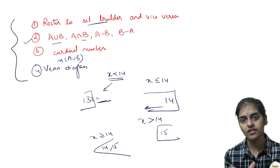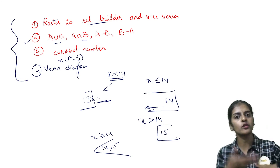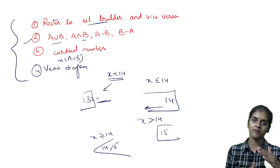Take one question. In that one question only, see that the set builder form is there. Convert it into roster form. Do A union B, A intersection B, A minus B, B minus A.